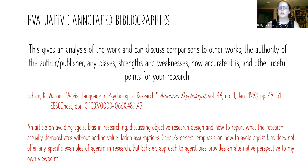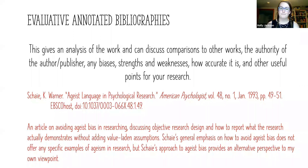For the example article 'Ageist Language in Psychological Research,' the annotated bibliography entry would be: an article on avoiding ageist bias in research, discussing objective research design, and how to report what the research actually demonstrates without adding value-laden assumptions. The author's general emphasis on how to avoid ageist bias does not offer specific examples of ageism in research, but provides an alternative perspective to the writer's own viewpoint. So you can see there's an analysis of how it's going to be useful and serve as an alternative perspective in the paper.